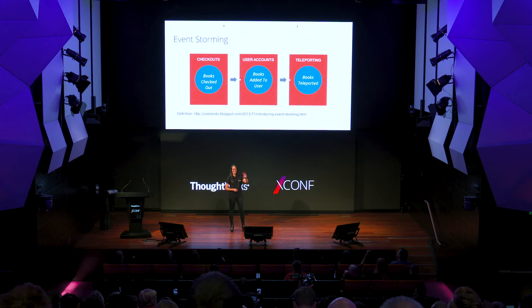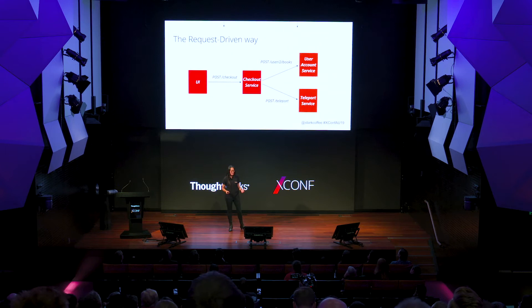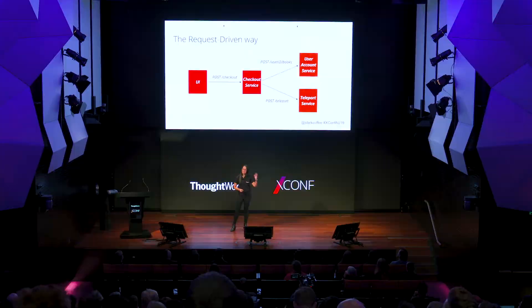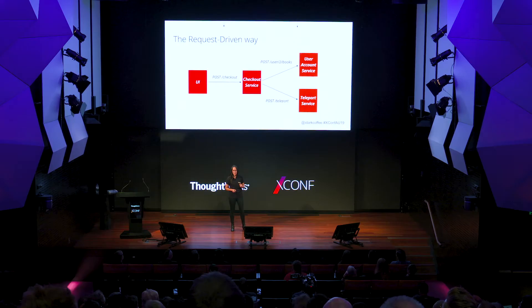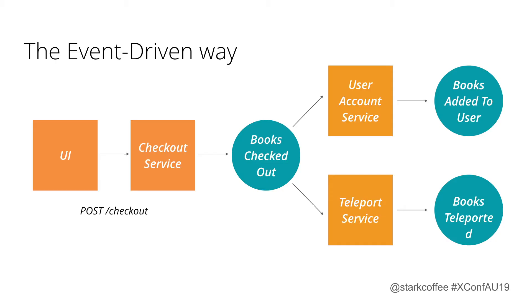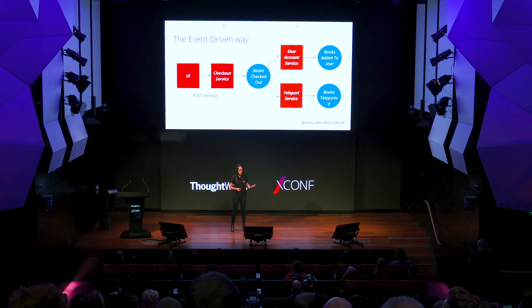If we were going to do this in the request-driven way, the UI would do a POST to the checkout service for the books to be checked out. The checkout service would do a POST to the user account service to add the books to that user, and then a POST to the teleport service. So the checkout service has to know which services to call to make up this workflow, and if I wanted to implement reminders I'd have to change the checkout service to call the reminder service. In the event-driven way, the checkout service just publishes a 'books checked out' event, and the other services listen and know their job.